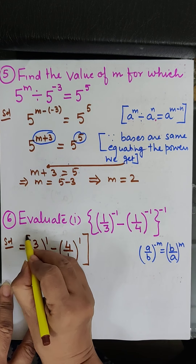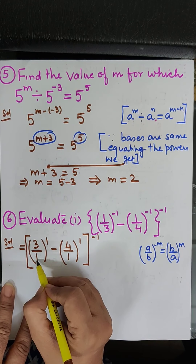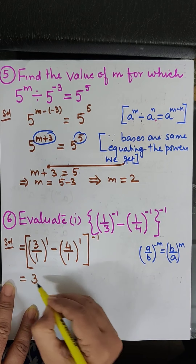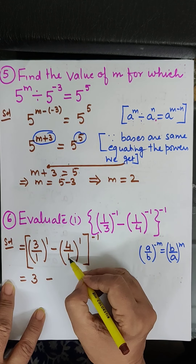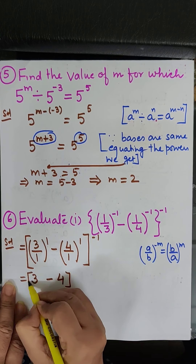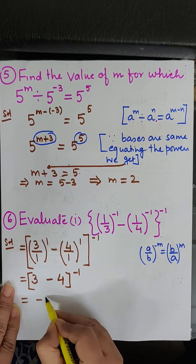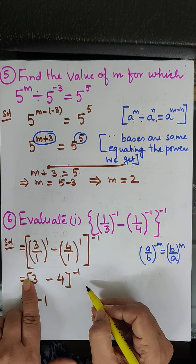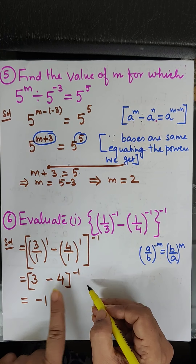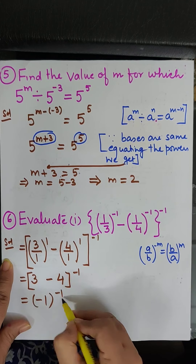So this equals 3 upon 1 raised to the power 1, minus 4 upon 1 raised to the power 1, whole to the power minus 1. Now 3 upon 1 to the power 1 is 3, and 4 upon 1 to the power 1 is 4. So we have 3 minus 4, raised to the power minus 1. 3 minus 4 is minus 1, since 4 is bigger and has a negative sign. So we get minus 1 raised to the power minus 1.